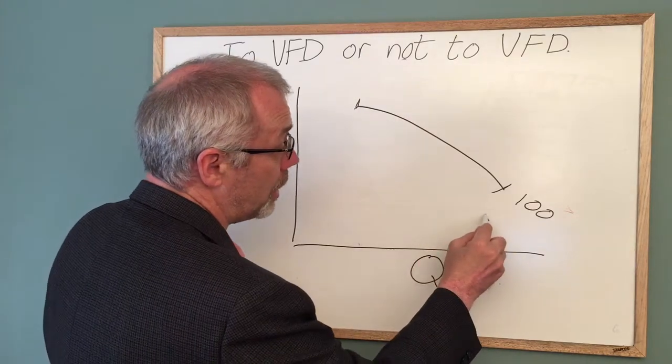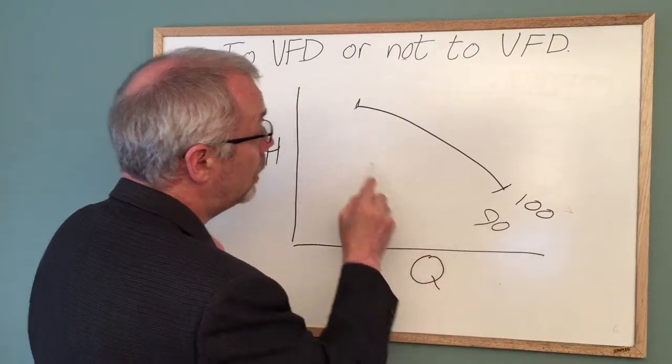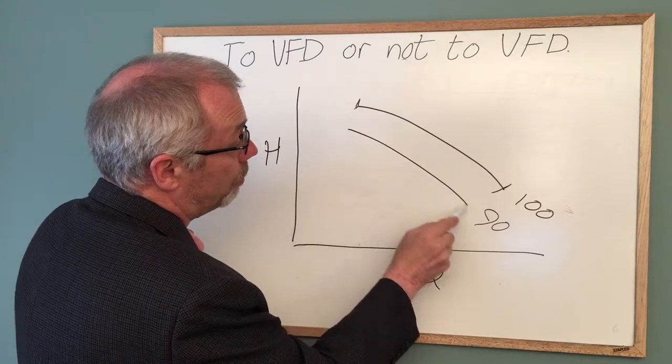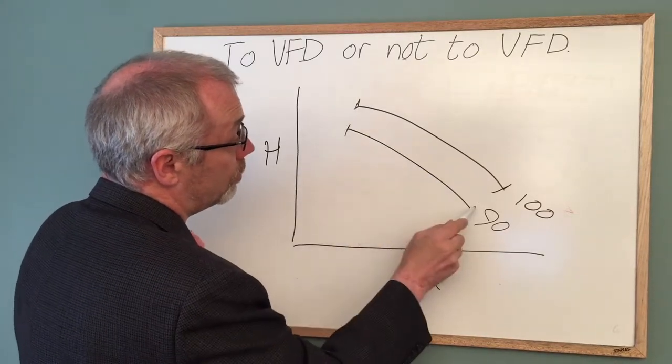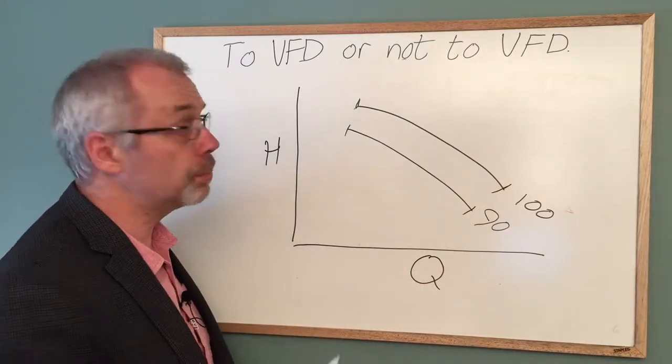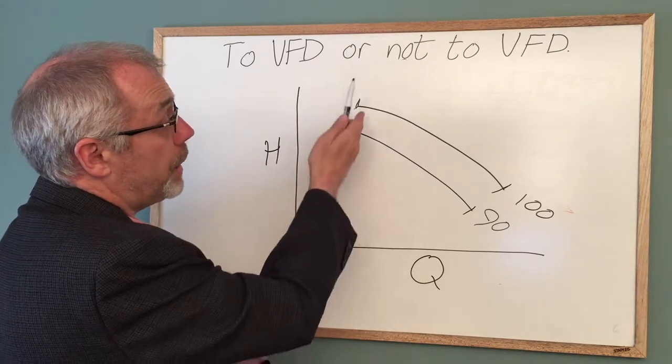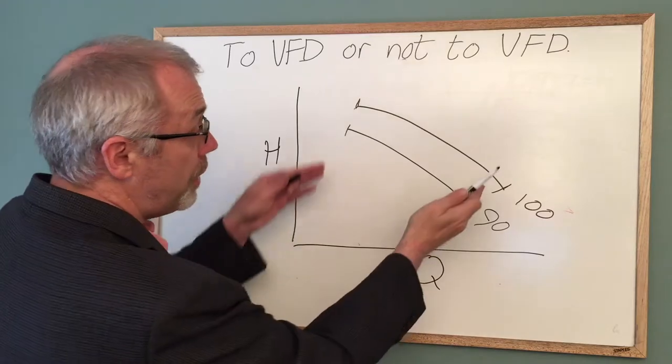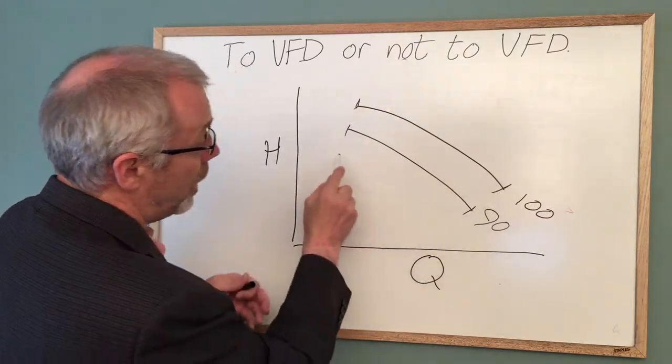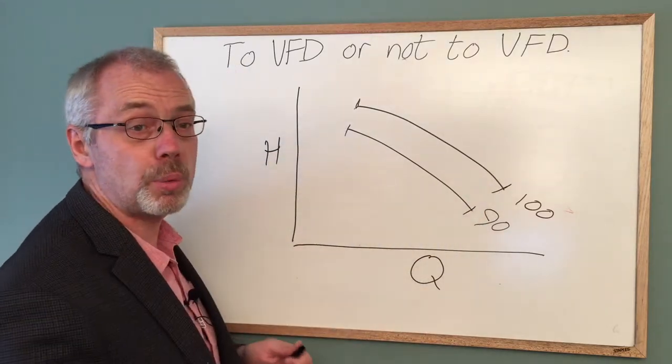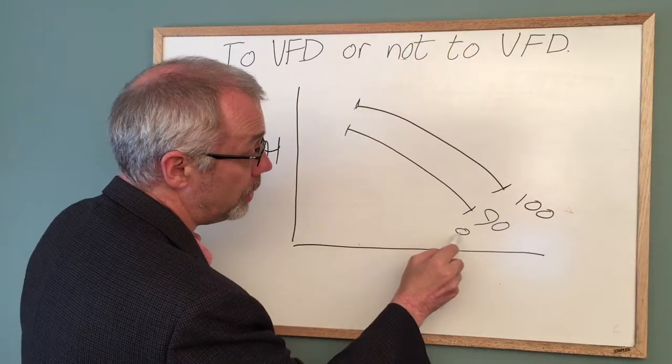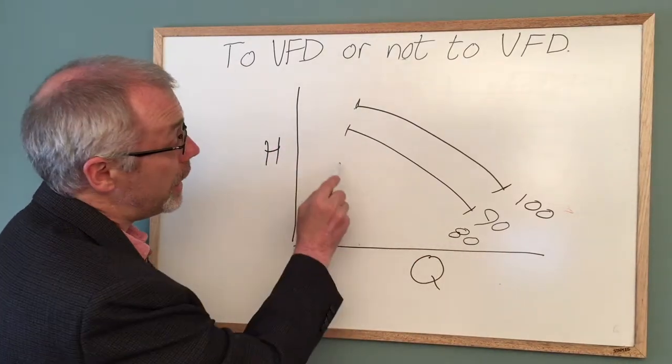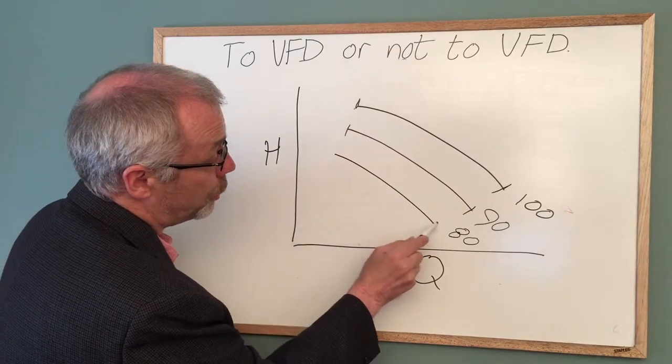At 90% of full speed the pump curve moves in. It gets closer to the origin. The minimum flow rate is reduced, the maximum flow rate is also reduced, and the entire curve shifts and comes in towards the origin as we reduce the speed. And we can see the same pattern if we go down to 80% of full speed.